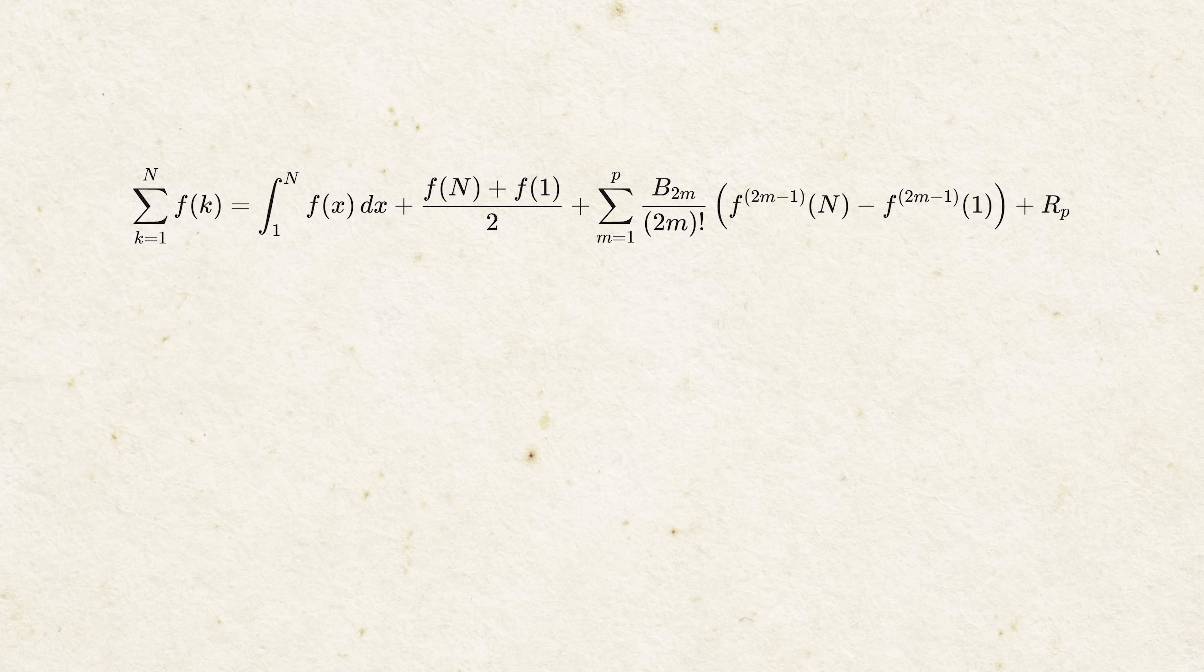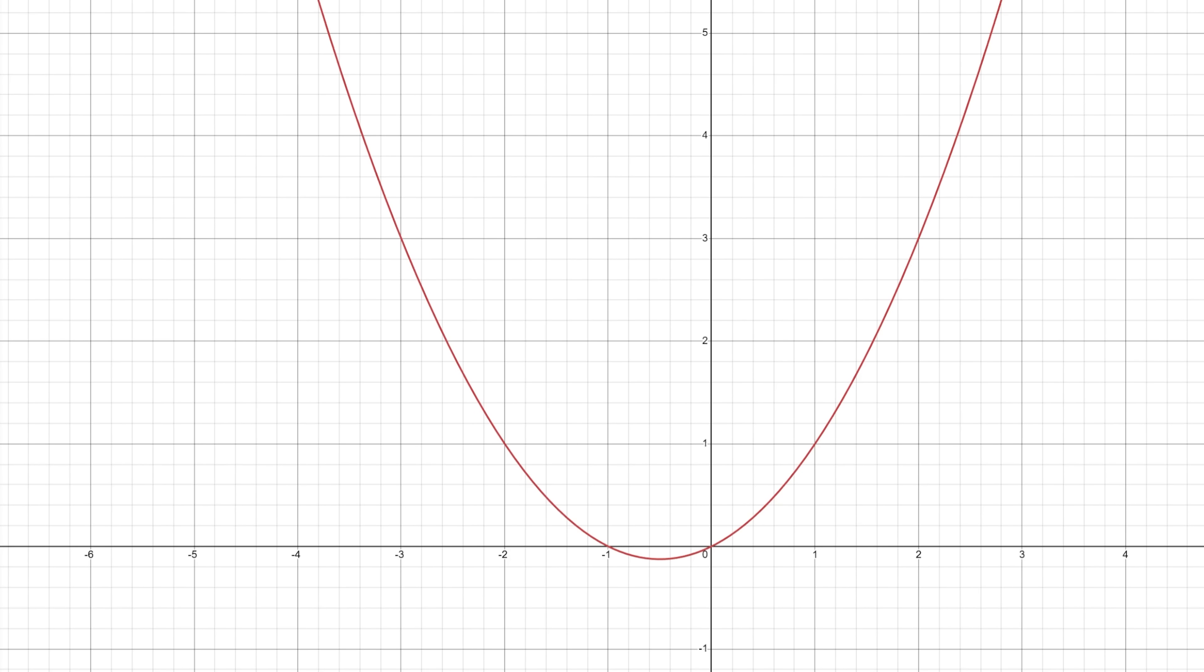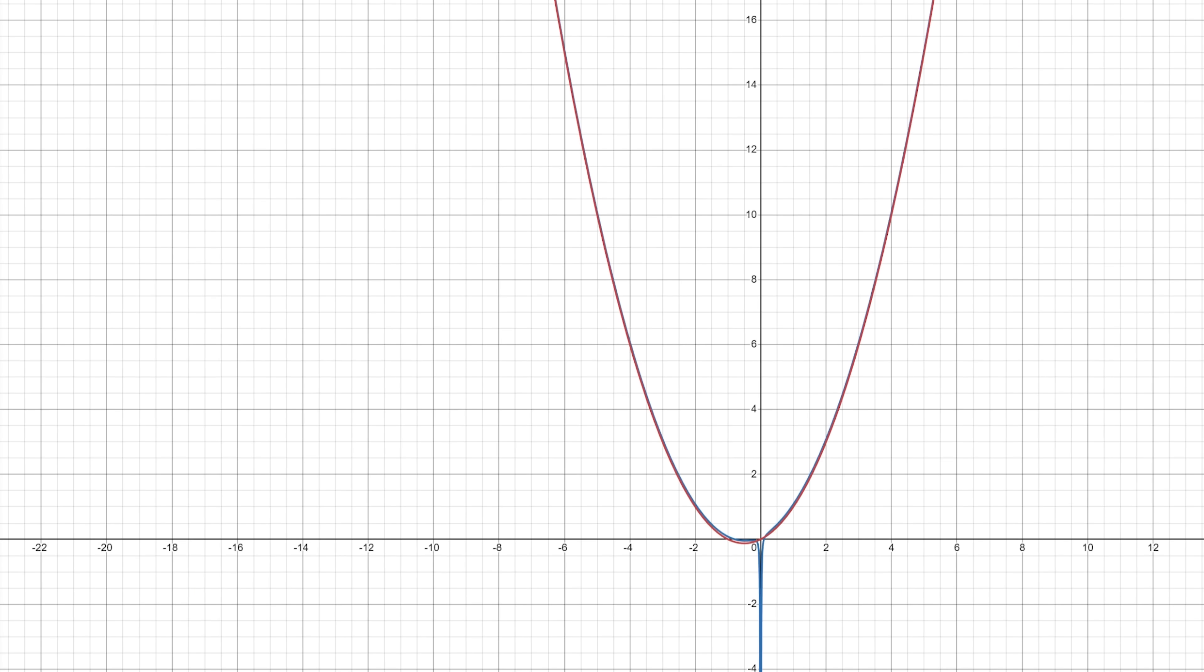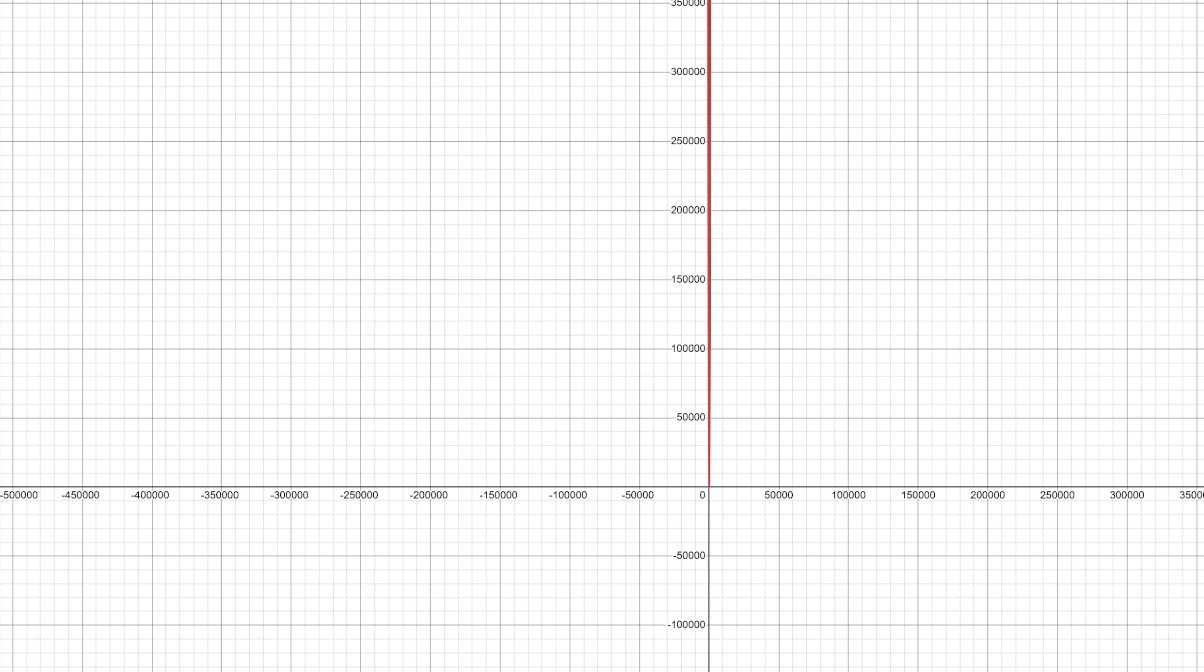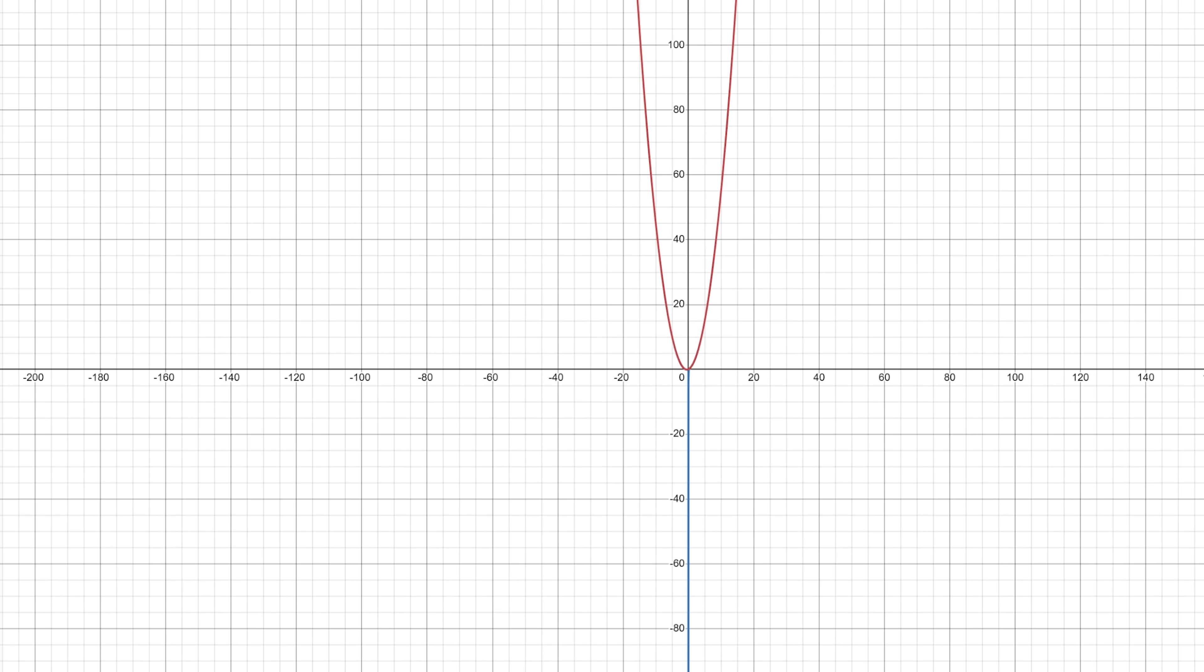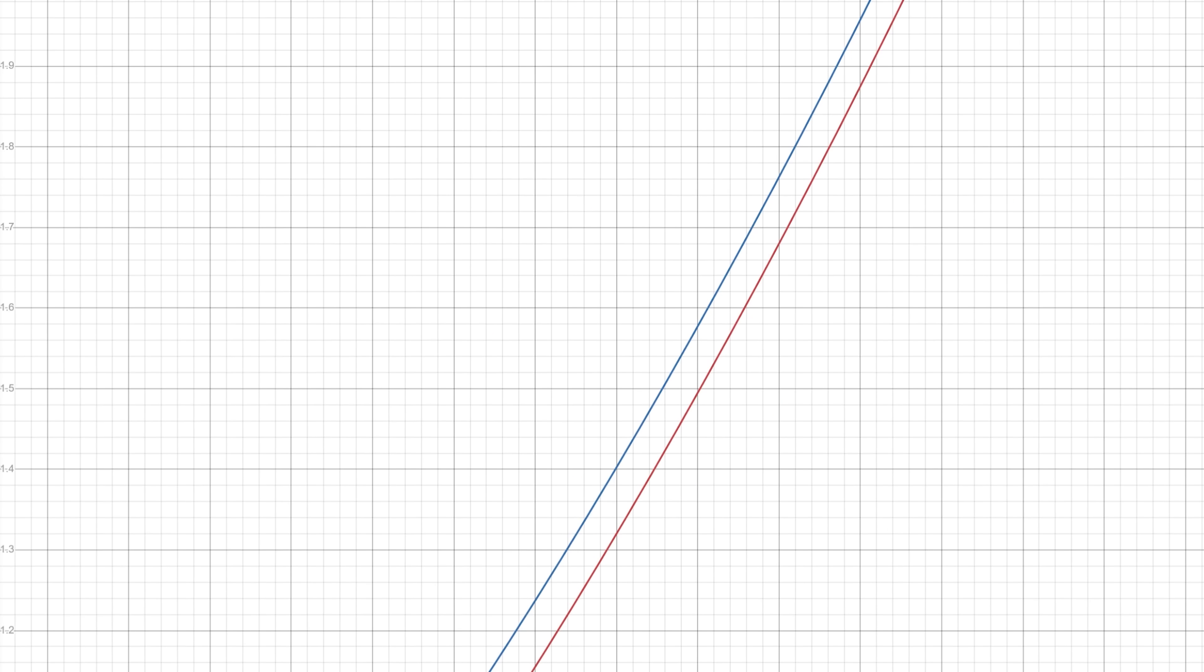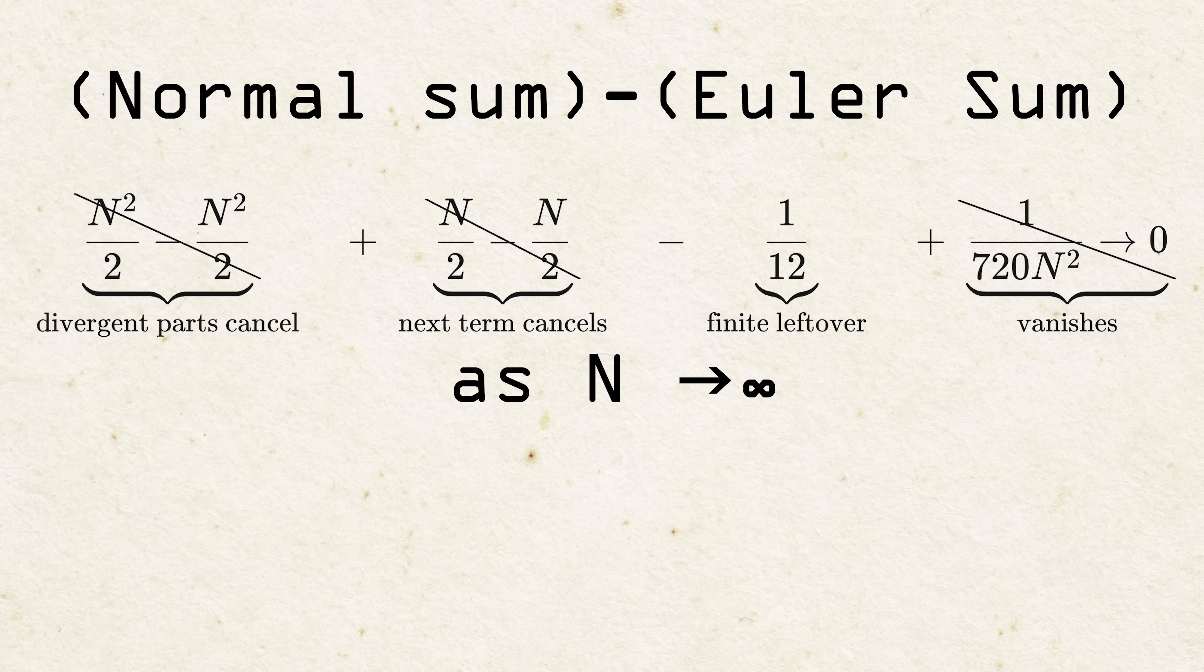He found a formula, the Euler-McLaren summation formula, it's now called, that basically uses integrals to approximate the sum, but for any value of n. So here I've graphed the ordinary finite n summation formula in red, so our regular equation, and the Euler-McLaren approximation in blue. And if I zoom out, you can see at very large values of n, they're almost identical. Both of them shoot off to infinity. But just like with our infinitely tall mountains, there's still a tiny finite offset between them. And that's what Ramanujan recognized. He said if you subtract the Euler-McLaren expansion from the discrete sum, and then throw away the parts that blow up, the finite leftover piece is negative 1/12th.